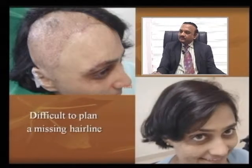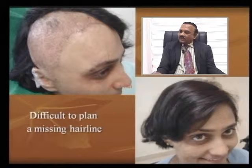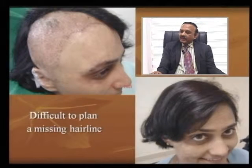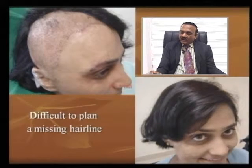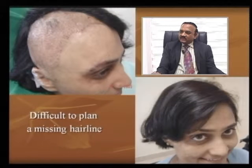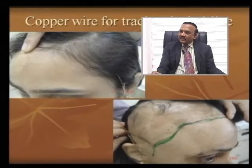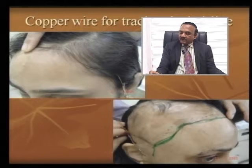If you have difficulty planning a missing hairline, you can take a malleable copper wire, trace the curvature on one side, and then copy it on the other side. This is what we are doing in this burn patient.